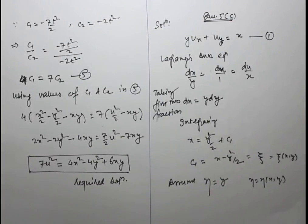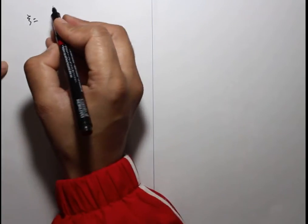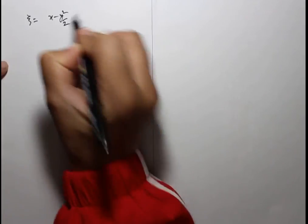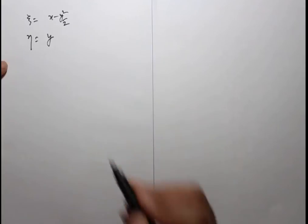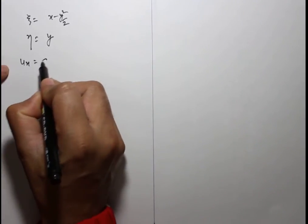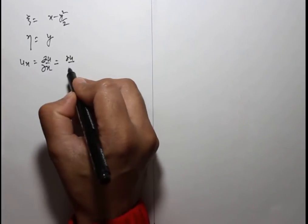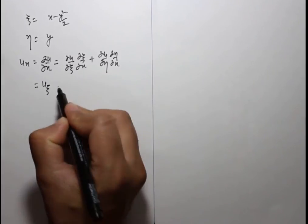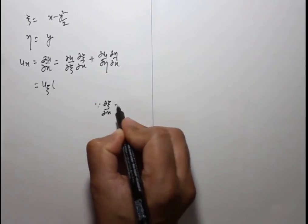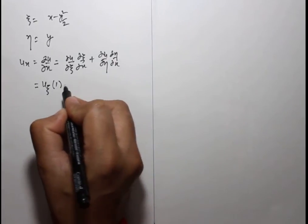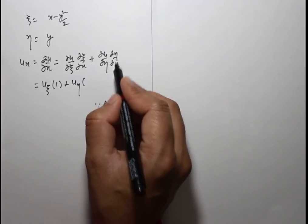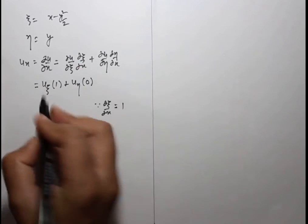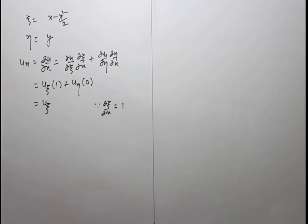We have ξ = x - y²/2 and η = y. Using the chain rule: u_x = u_ξ (∂ξ/∂x) + u_η (∂η/∂x) = u_ξ · 1 + u_η · 0 = u_ξ.